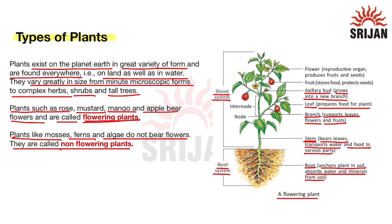Fruit stores food and protects the seeds; it is formed after fertilization. The flower is the reproductive organ and it produces fruits and seeds.